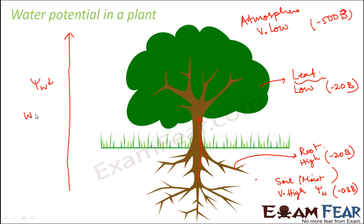In the soil, water is at the highest potential and in the atmosphere it is at the lowest potential. Water moves up through the roots to the stem and then to the leaves, and from the leaves it moves out by evaporation through a process called transpiration. That is how water movement actually takes place in a plant.